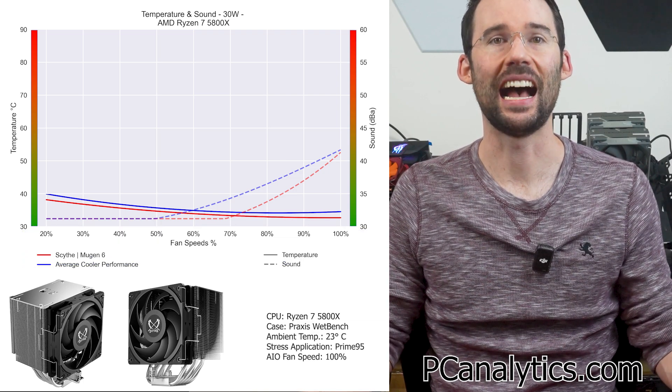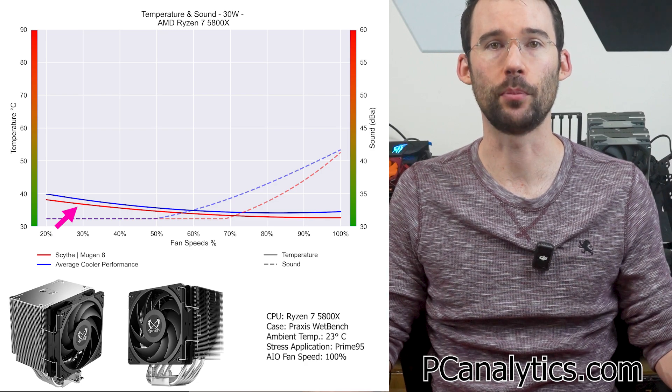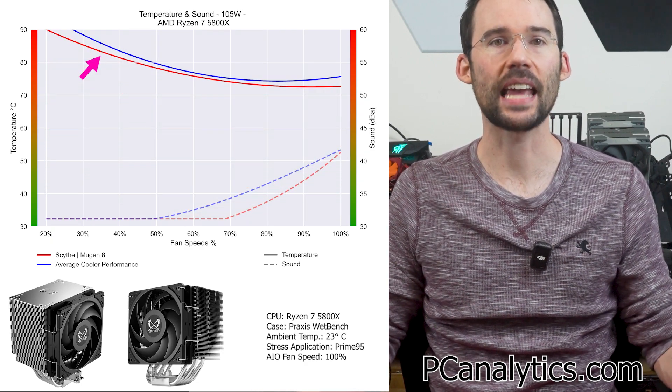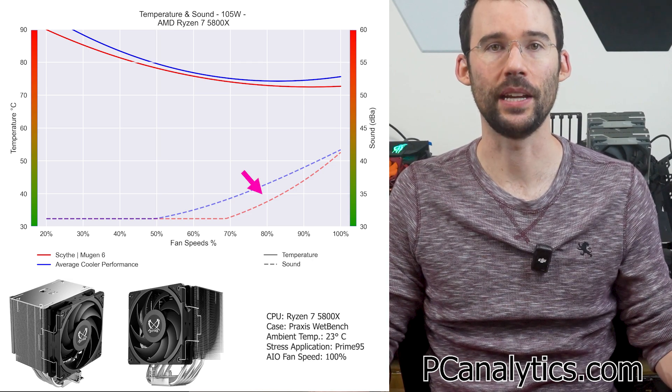At idle, the Scythe Mugen 6 in red performs slightly cooler than the average cooler in blue. As we turn up the heat to 105 watts, we can see that its gap holds steady. Additionally, we see that the Scythe is noticeably quieter at the higher RPMs.